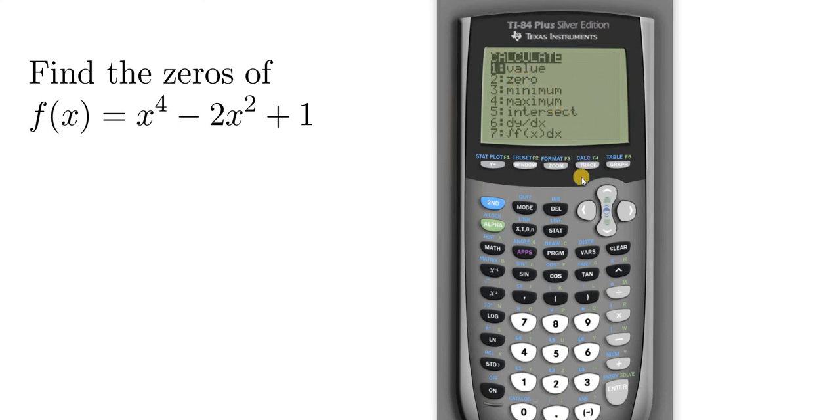We're looking for the zeros, so you go to zero, then you hit enter. Let's find the one here on the left first. It says left bound. That means our flashing cursor has to be to the left of where the zero is. So I'm going to move the cursor over by repeatedly pressing the left arrow key. Okay, that's good. Anywhere up here is fine. We're to the left of where the zero is. The zero is where it touches the x-axis.